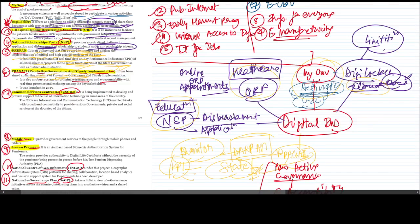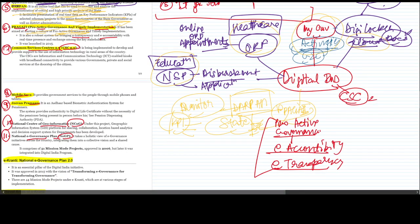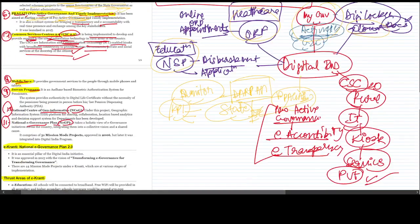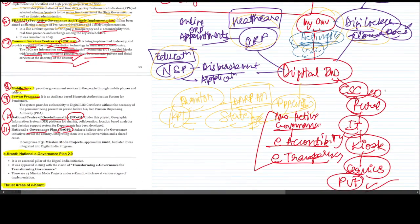Then is Common Services Center 2.0, CSC 2.0. It is to implement, develop, and provide support to the use of information technology in rural areas of the country. For rural areas, bringing information and communication technology enabled kiosks with broadband connectivity to provide various government, private, and social services at doorstep of citizens. We will setup kiosks in rural areas where basic government or private services will be available to people. This is what PRAGATI scheme was, this is what CSC 2.0 scheme was. Mobile Seva provides government services through mobile phones and tablets.